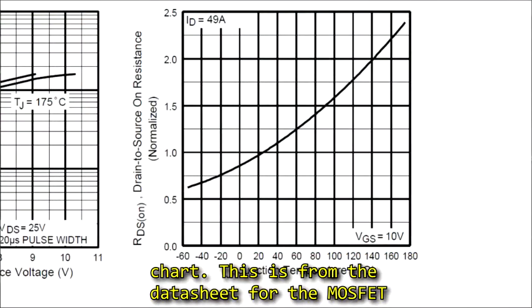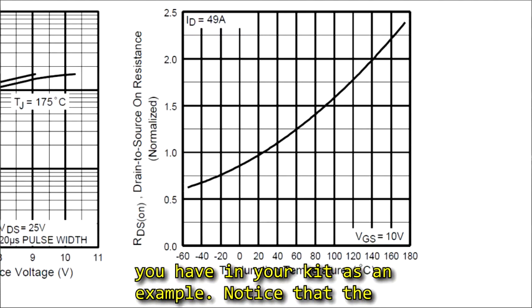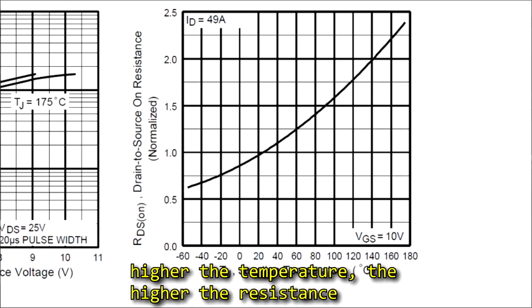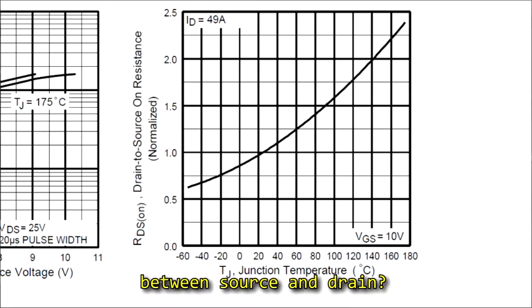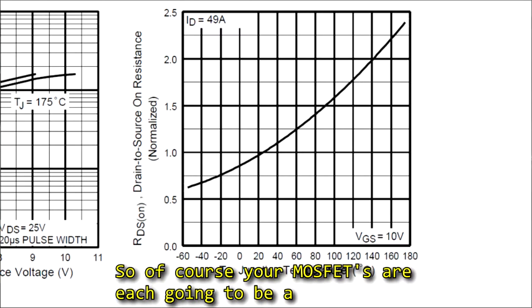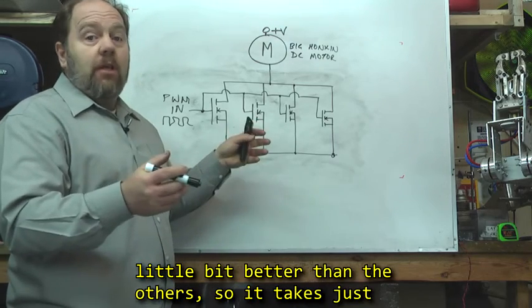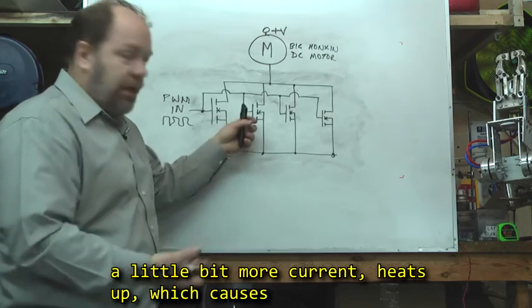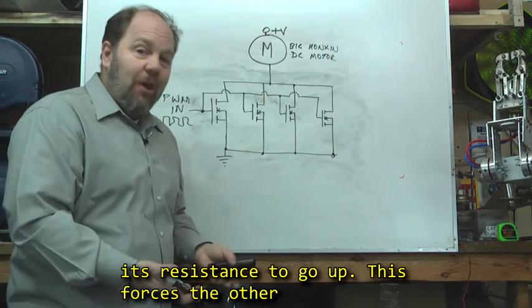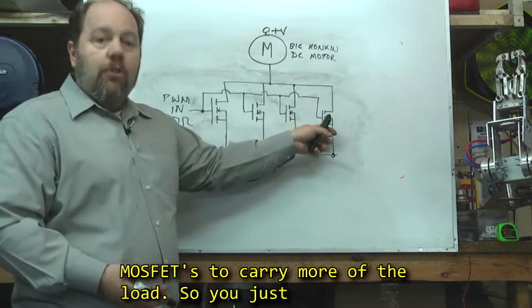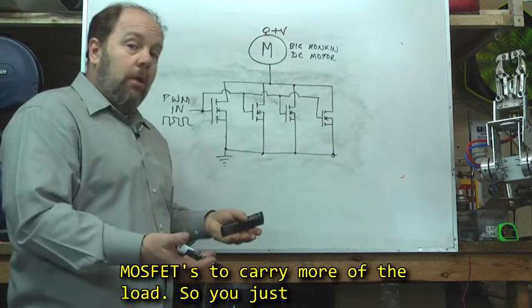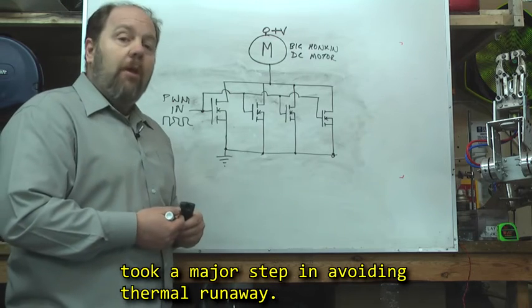This is from the datasheet for the MOSFET. This is the one you have in your kit as an example. Notice that the higher the temperature, the higher the resistance between the source and drain. So of course your MOSFETs are each going to be a little bit different. One will conduct just a little better than the others, so it takes up just a little bit more current. It heats up, which causes its resistance to go up. This forces the other MOSFETs to carry more of the load. So you just took a major step in avoiding thermal runaway.